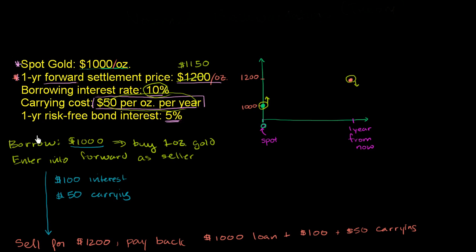In the last video, we established a reasonable upper bound on the one-year forward settlement price of gold. We established that at $1150, which is essentially the spot price plus the borrowing rate to borrow $1000 plus the carrying cost of the gold. What I want to do in this video is to think of a reasonable lower bound.